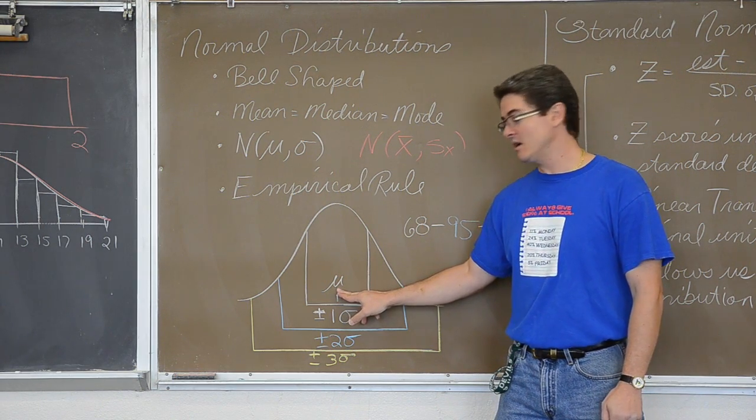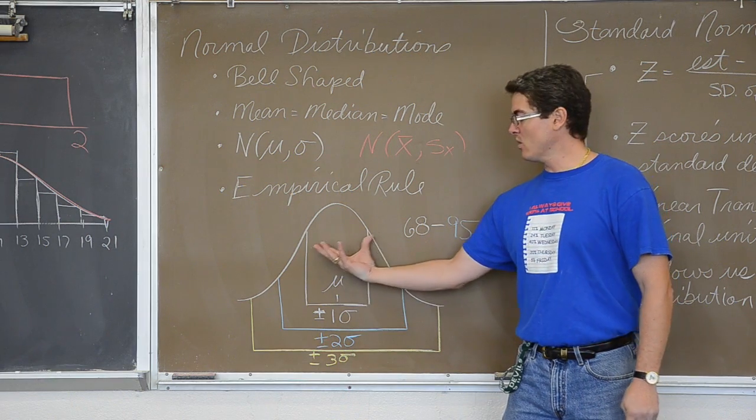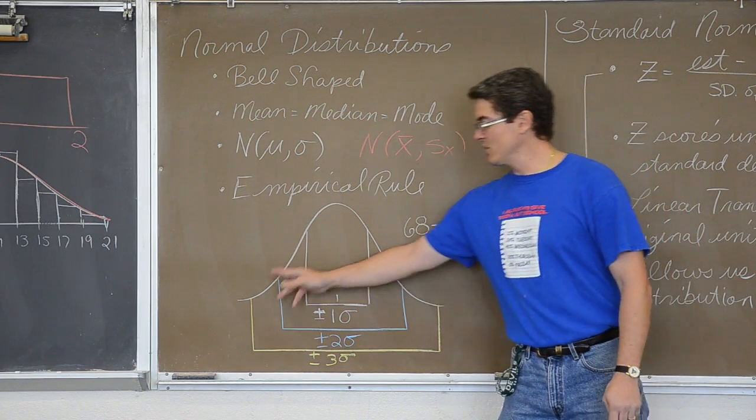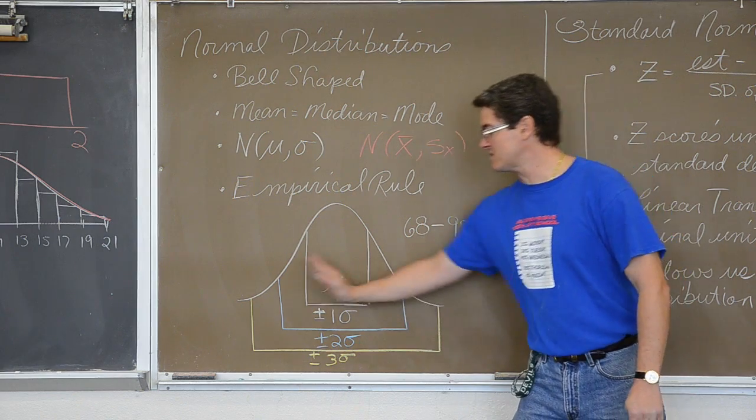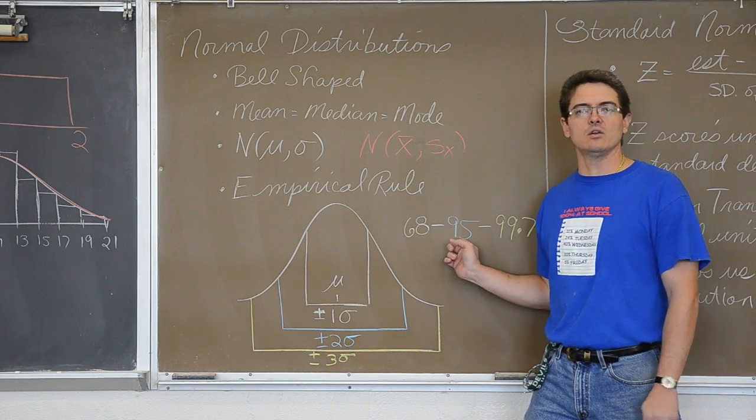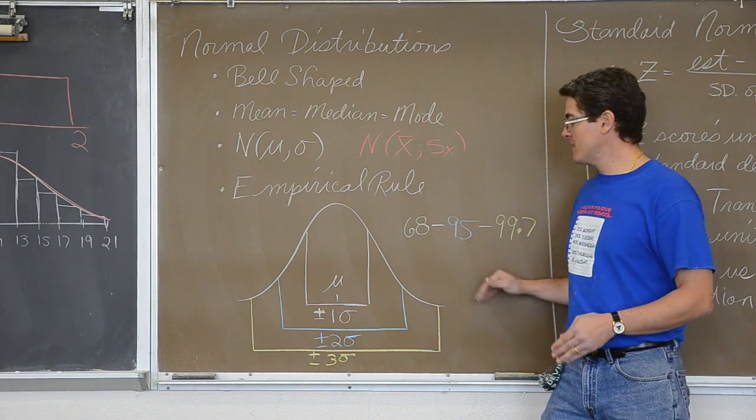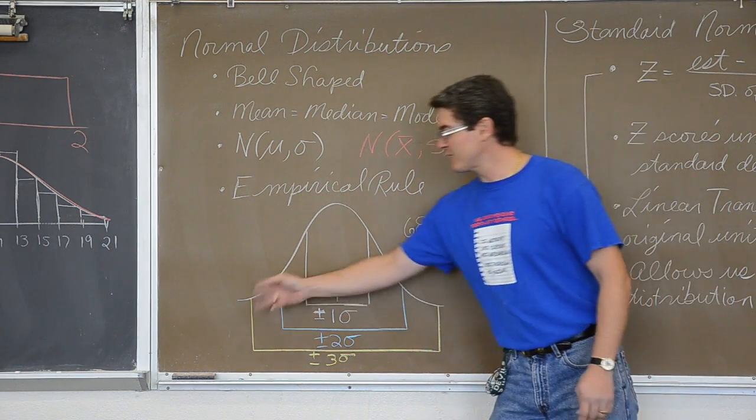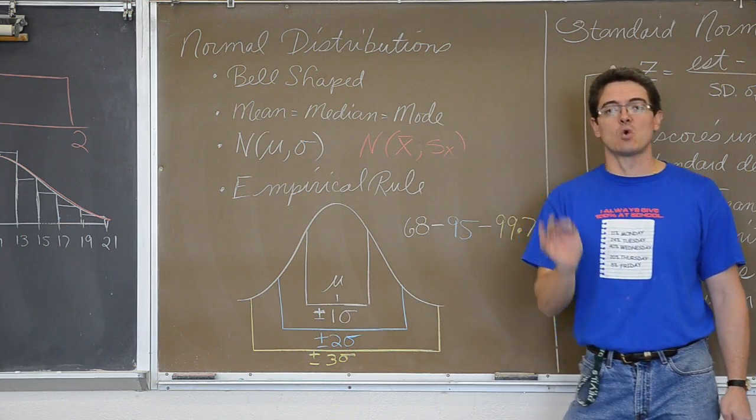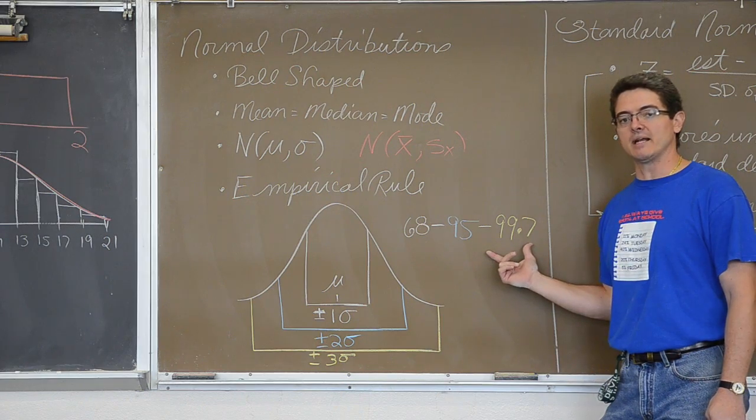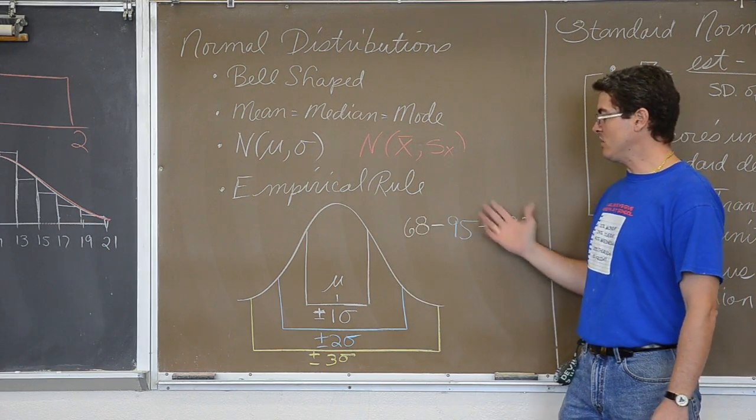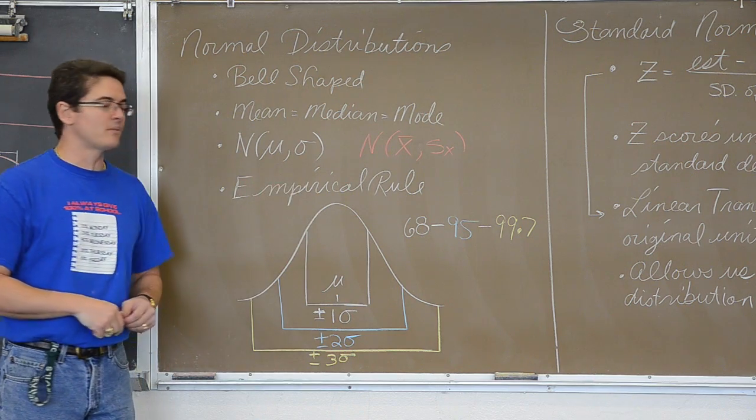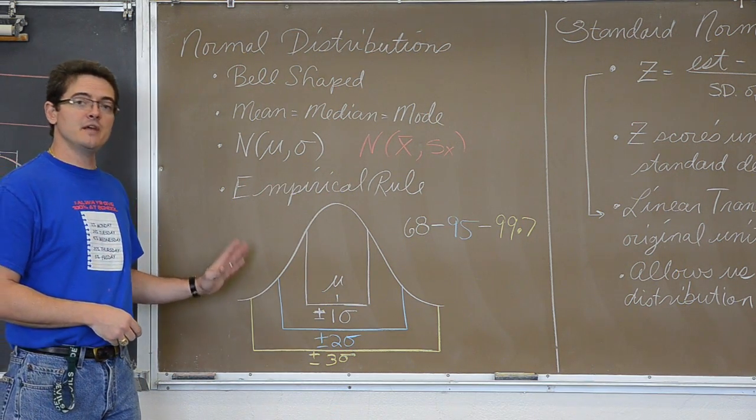If you go from the center of the bell curve, the mean, left and right one standard deviation, you are going to contain within that interval, plus or minus one standard deviation, 68% of the data. If you go two standard deviations, one to the left and one to the right, that entire interval is going to hold 95% of the data. Your actual real life data will not be exactly 95%, but as a mathematical model, it will be approximately 95%. And if you go to the left three standard deviations and to the right three standard deviations, if the data is normal, you will contain approximately 99.7% of the data.